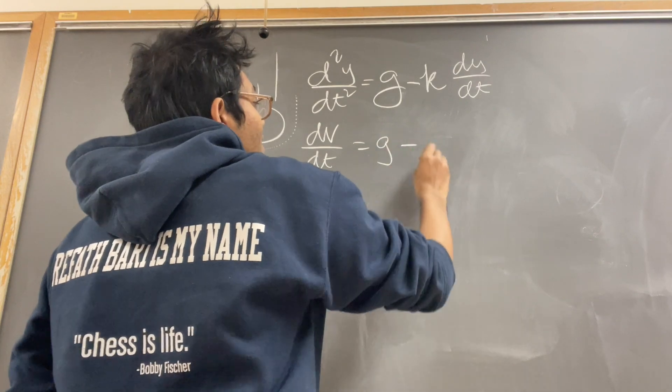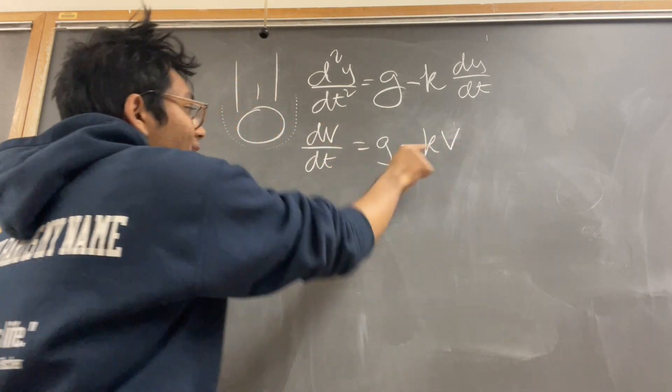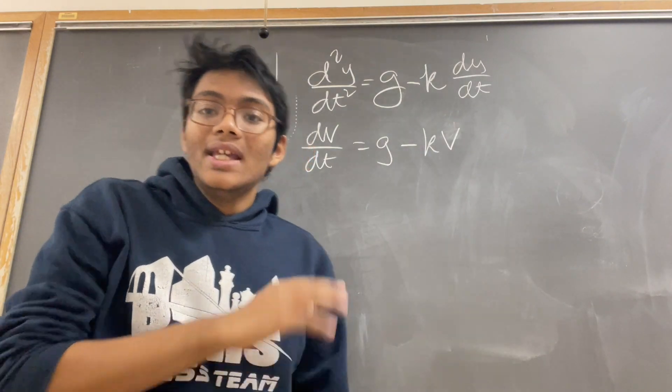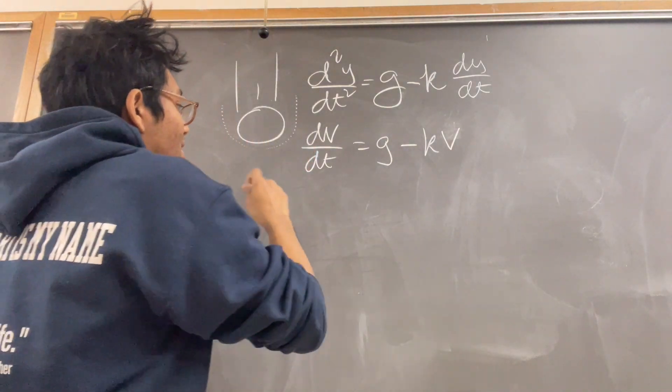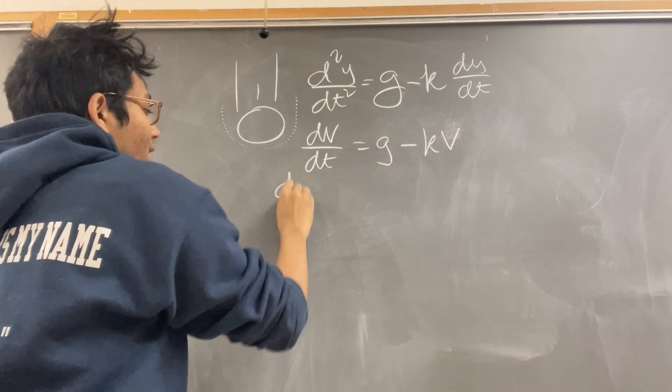And so, we have, in written terms, dv/dt is g minus kv, a simple, separable, first-order differential equation. And so, now, we solve simply for v.